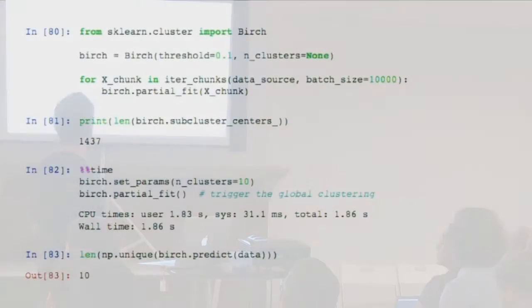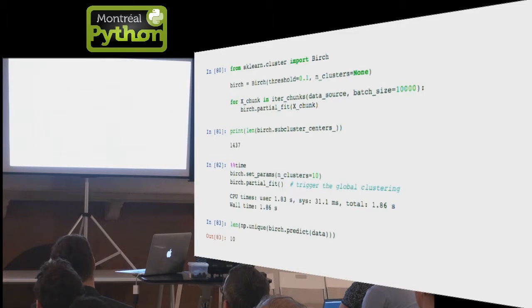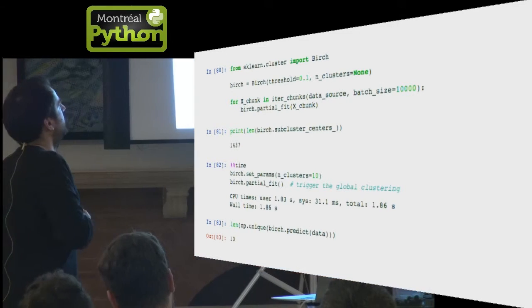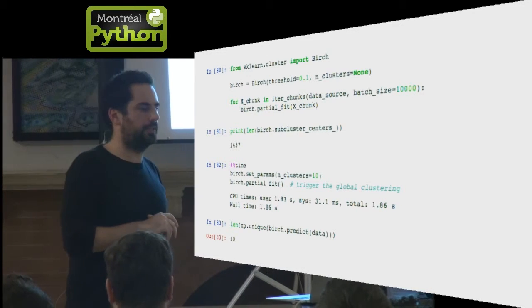In practice in scikit-learn, it looks like this. You create the model, Birch, as usual, but instead of calling fit on the full data set directly, you will iterate over a data source that will give you chunks of data one at a time. You will call partial fit on each chunk on the same model by iterating on the full data set. This full data set can be several millions or billions of samples, it would just take longer, but it will use a constant memory size.